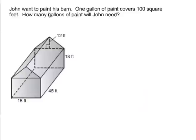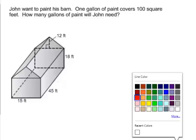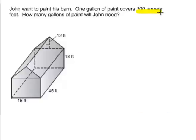Example two: John wants to paint his barn. One gallon of paint covers 100 square feet. How many gallons of paint will John need? When we talk about painting and we see 'square feet,' that tells us we're trying to find surface area, because square feet implies surface area.